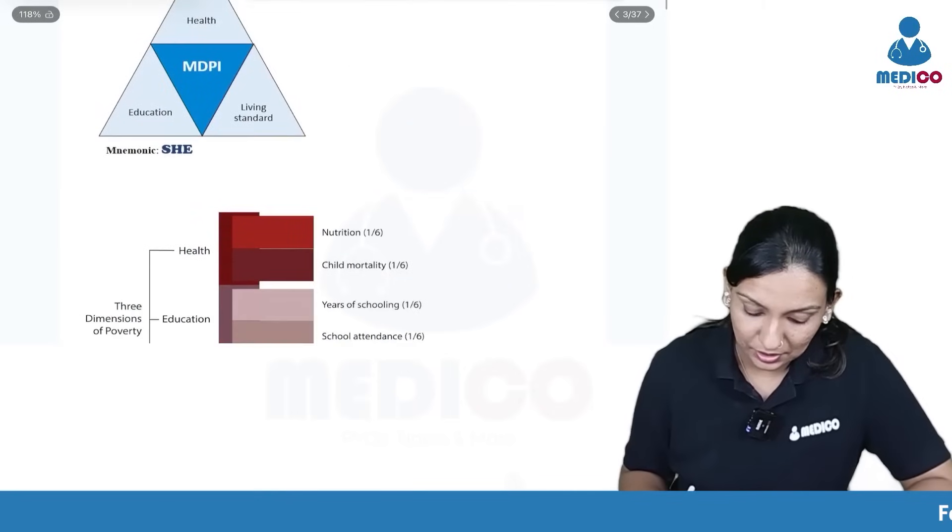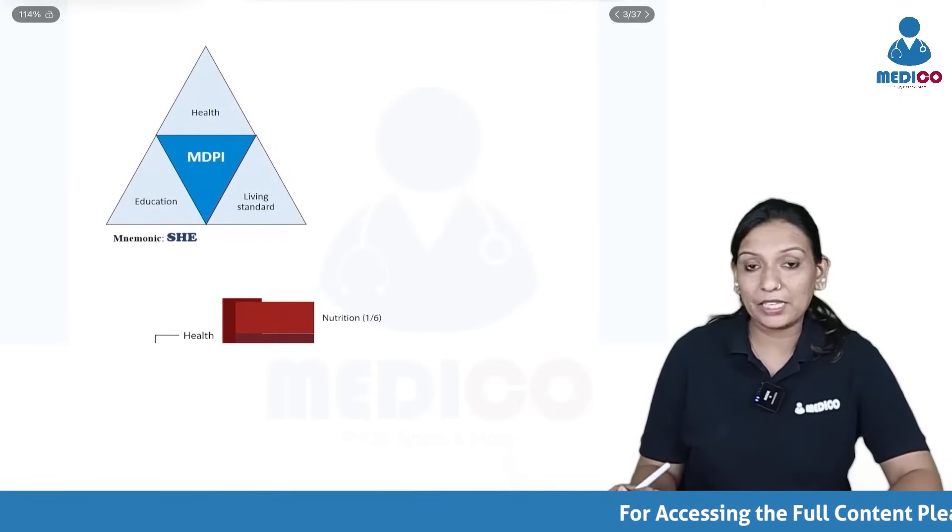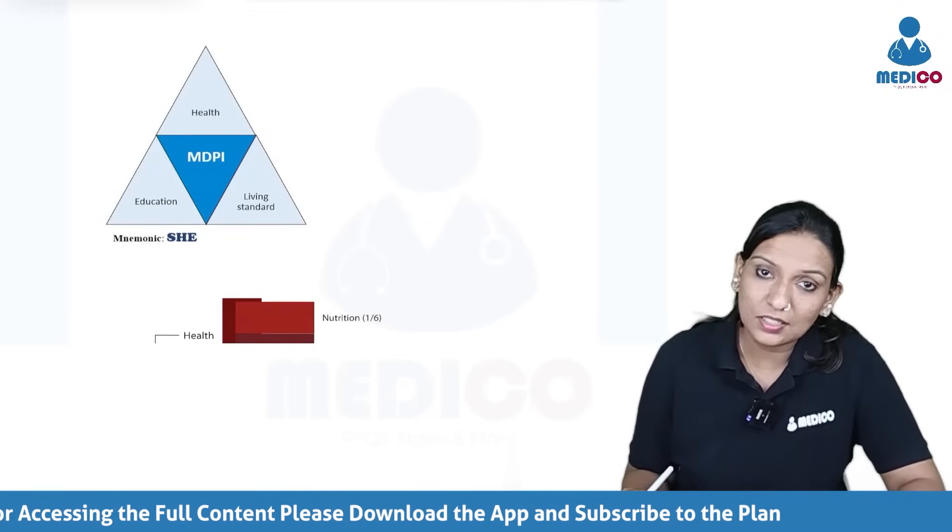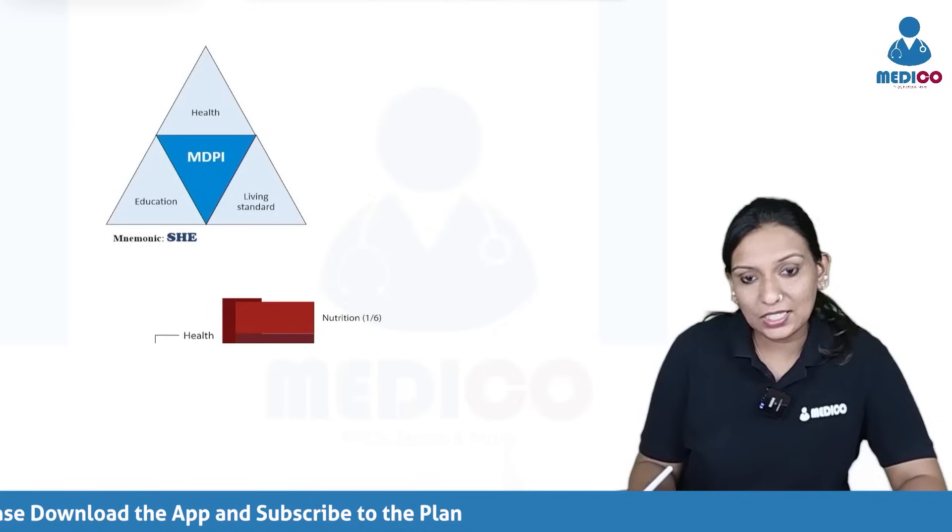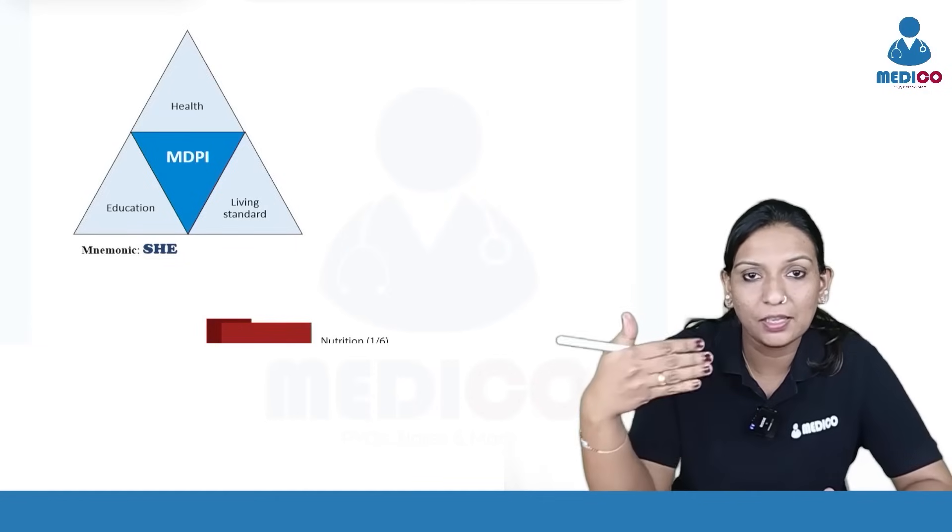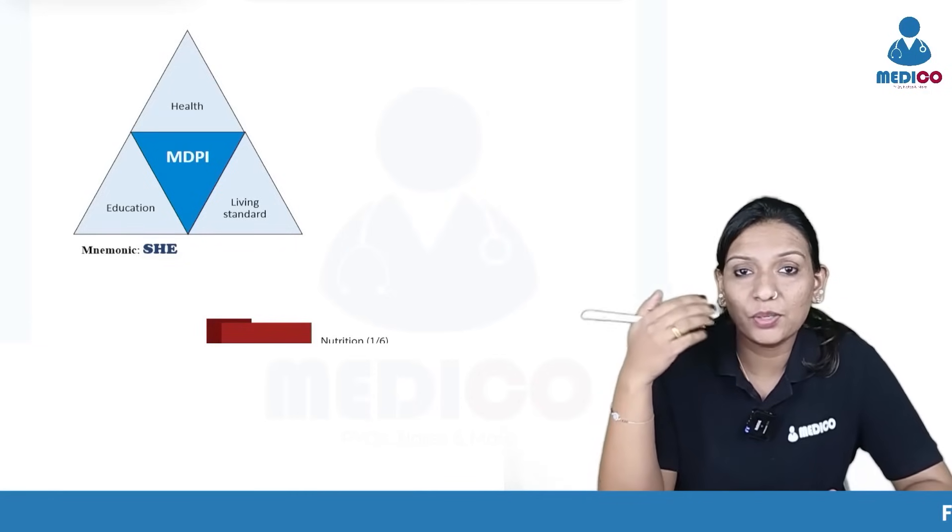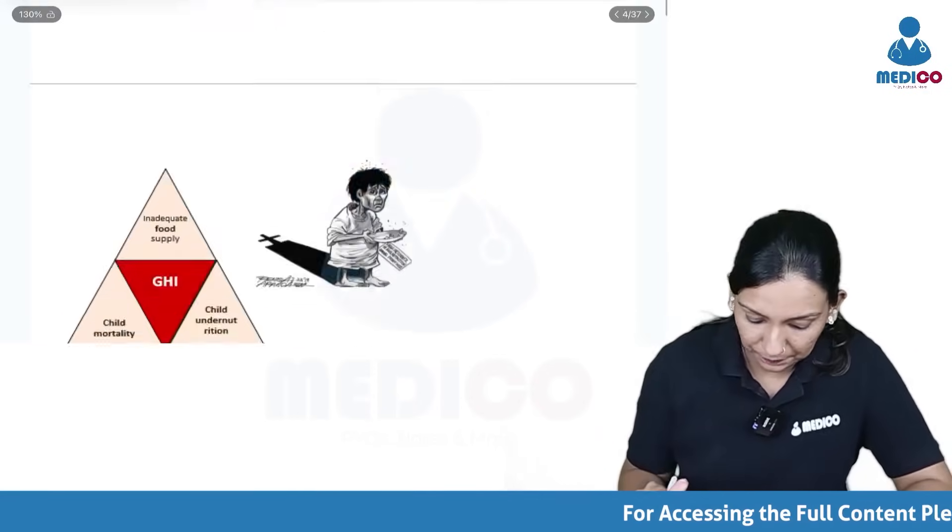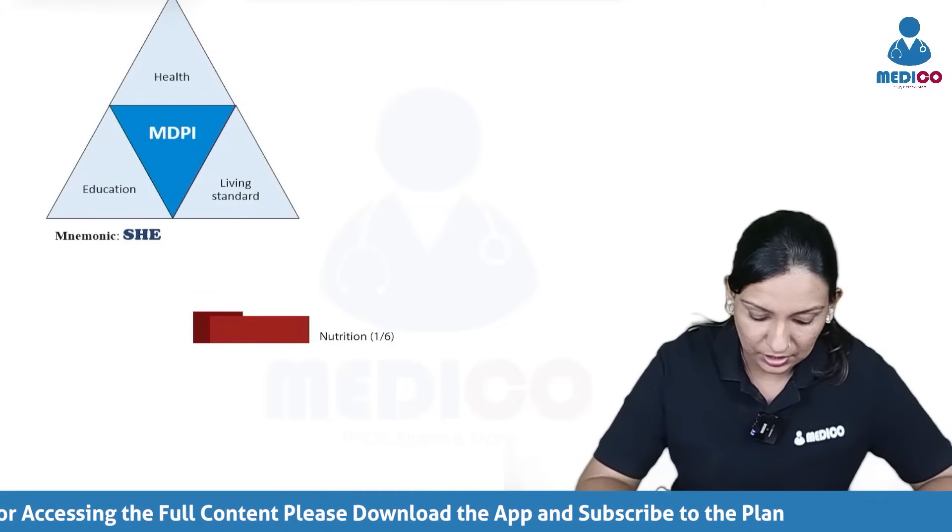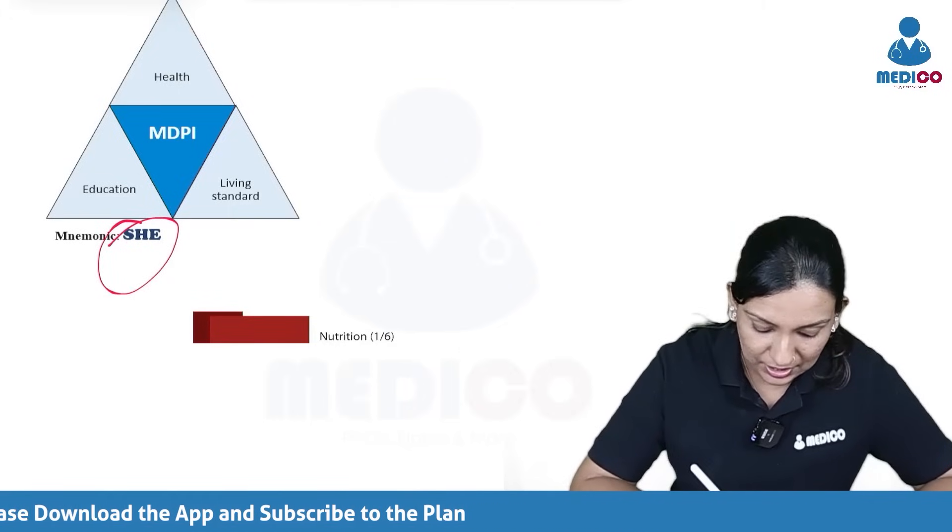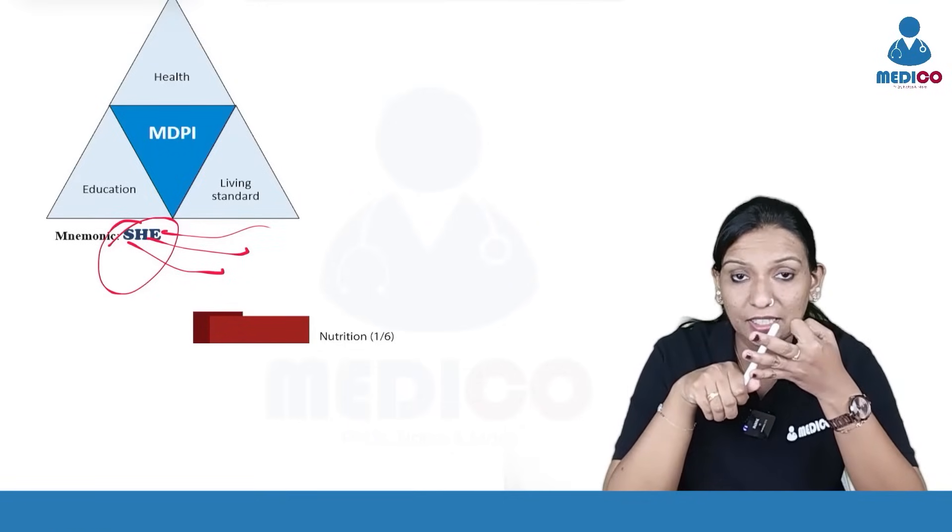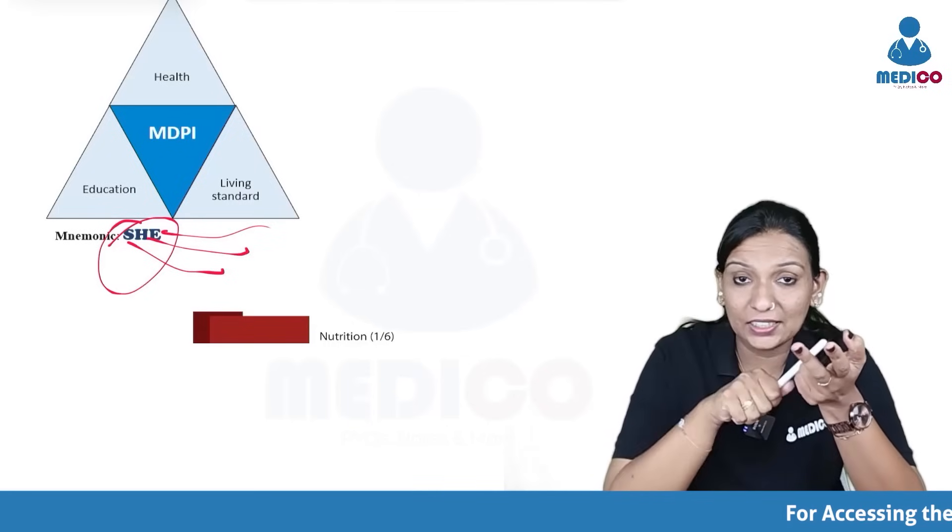Now moving on to the next image. This is MTPI or multidimensional poverty index. They can ask you about the domains that are coming under other indicators like the MTPI. Under MTPI, we have three domains which you can remember as SHE: S is for standard of living, H is for health and E is for education. These are the main three things that we are assessing in the multidimensional poverty index.